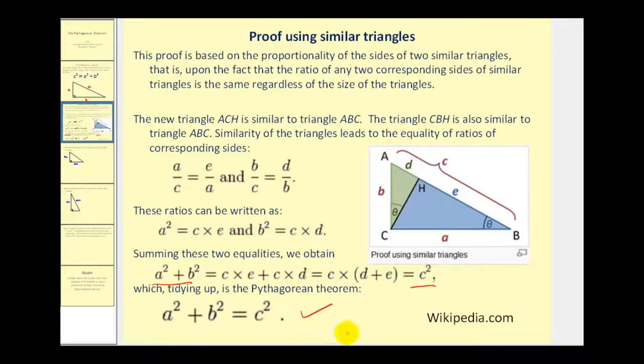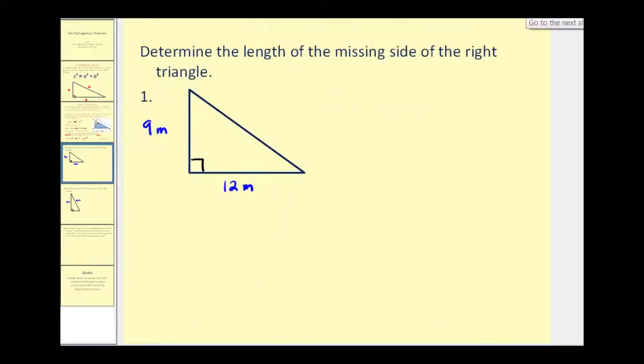Now that we've proven it, let's go ahead and try some problems. We want to find the length of the missing side of the right triangle. So we'll start with our theorem. C squared equals A squared plus B squared.